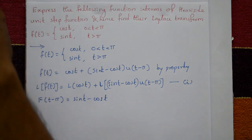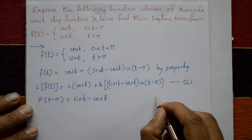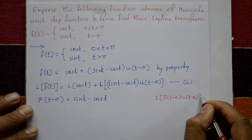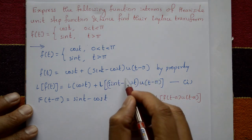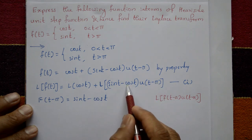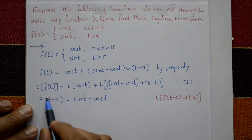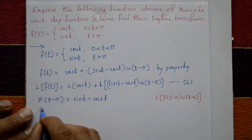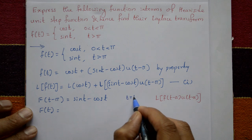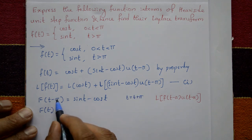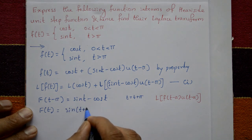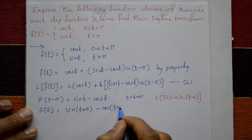By the shifting property, L{f(t − a) · u(t − a)} = e^(−as) · F(s). To find f(t), substitute t → t + π: f(t + π − π) = f(t) = sin(t + π) − cos(t + π).